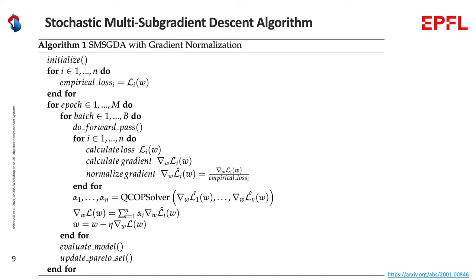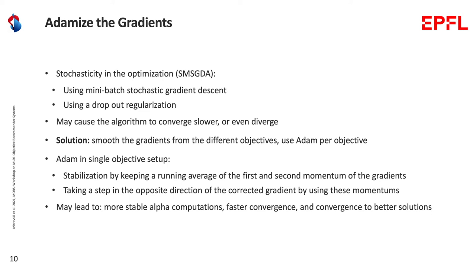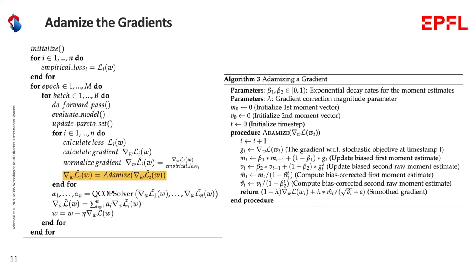The MGD algorithm has stochasticity from mini-batch stochastic gradient descent or dropout regularization, which may cause slower convergence or divergence. To alleviate this, we smooth gradients from different objectives using Adam per objective. In a single-objective setup, Adam keeps running averages of the first and second momentum of gradients and corrects the gradient using these momentums. Using Adam per objective in a multi-objective setup may lead to more stable alpha computations, faster convergence, and convergence to better solutions. We implemented this by adding one highlighted line to the vanilla MGD algorithm — a procedure called the Adamized gradient.